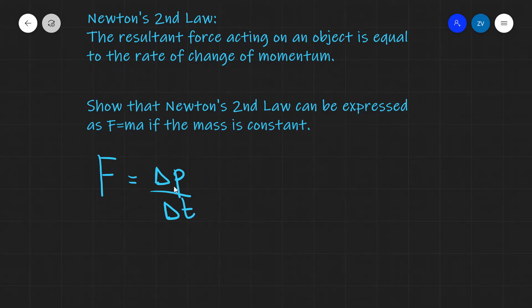Now delta p, being the change of momentum, will be equal to the final momentum minus the initial momentum. Remember momentum is mass times velocity, so we can express this as m times v, where v is the final velocity, take away m times u, where u is the initial velocity.